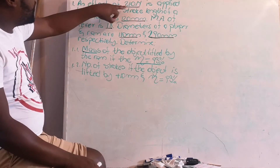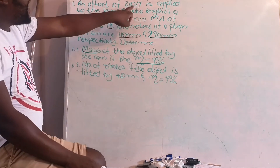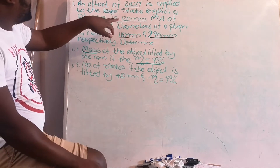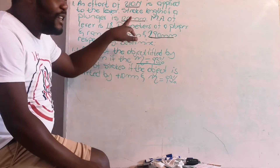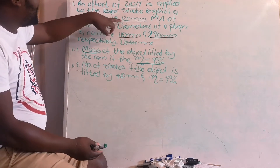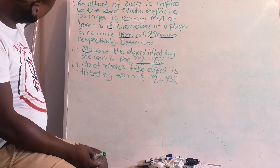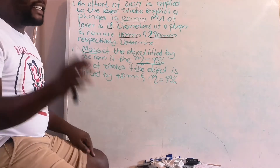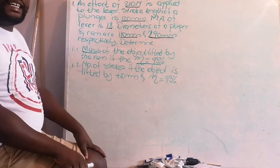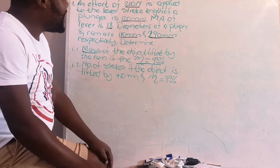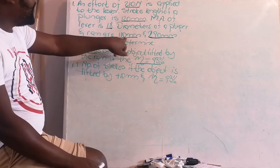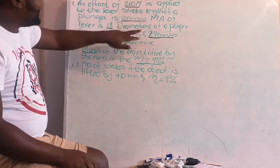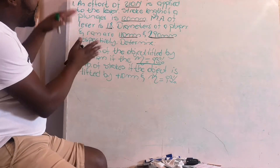They say you have an effort of 210 newtons applied in a lever. The stroke length is 120 millimeters — that is the distance the plunger moves from top to bottom. The mechanical advantage of the lever is 18. The diameters of the plunger and ram are 110 mm, 220 mm, and 290 mm respectively. You write all these data dimensions down.